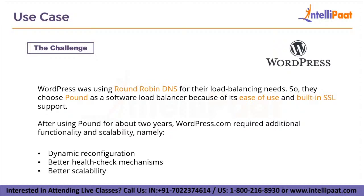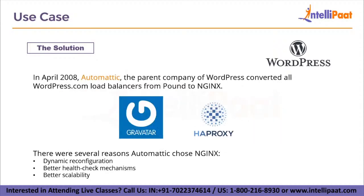Now let's see how Nginx solved this problem. In April 2008, Automattic — the parent company of WordPress — converted all WordPress.com load balancers from Pound to Nginx. Before that, Automattic engineers had been using Nginx for Gravatar, another product of Automattic, for a few months and were quite happy with it. They also tried it on other products like HAProxy and LVS, and it worked out on both. Finally, they made the move to shift WordPress.com to Nginx as well.